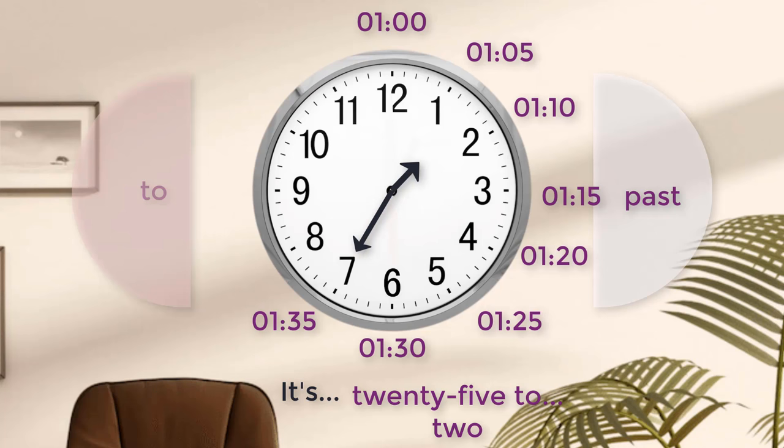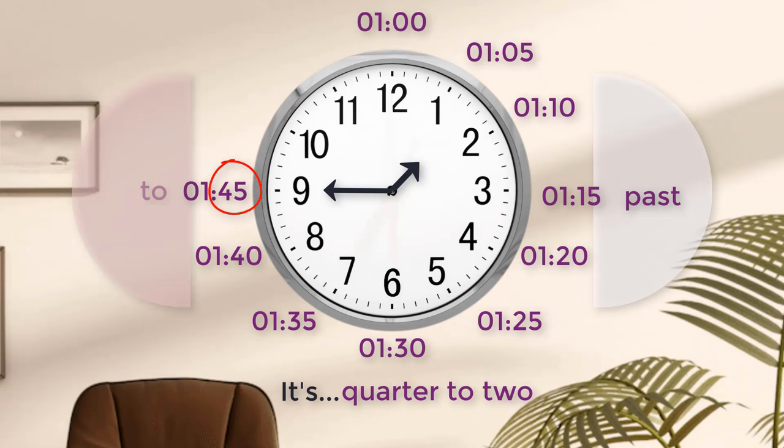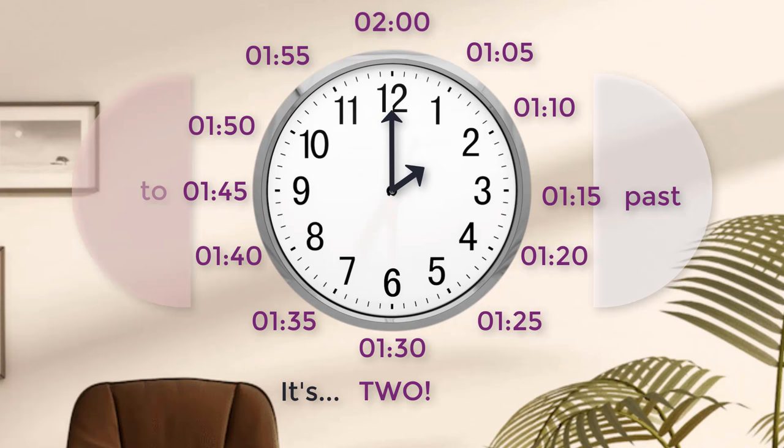It's twenty-five to two. It's twenty to two. It's quarter to two. Forty-five is always quarter to. It's ten to two. It's five to two. Now it's two.